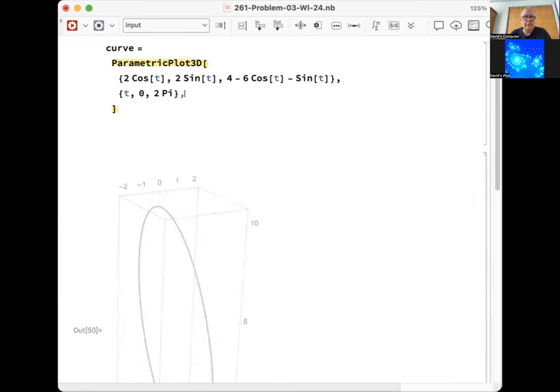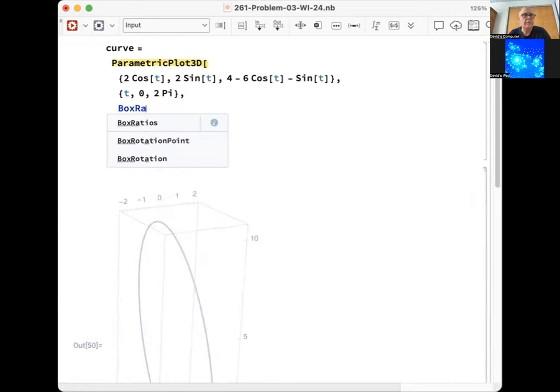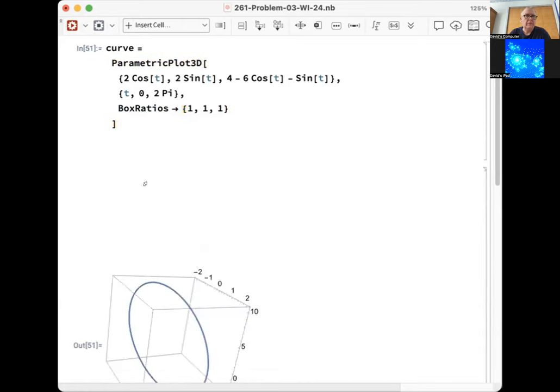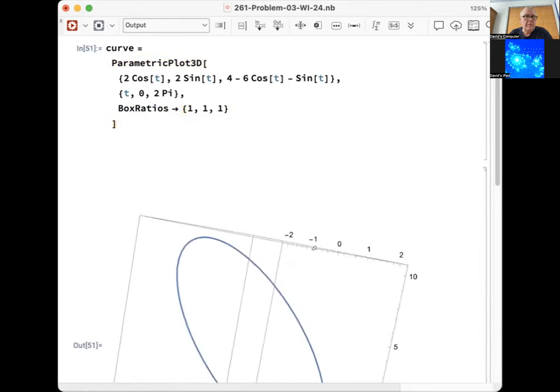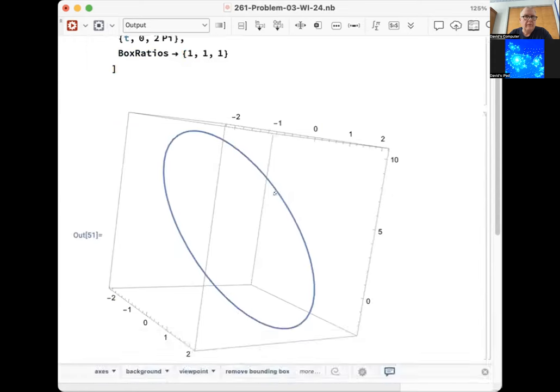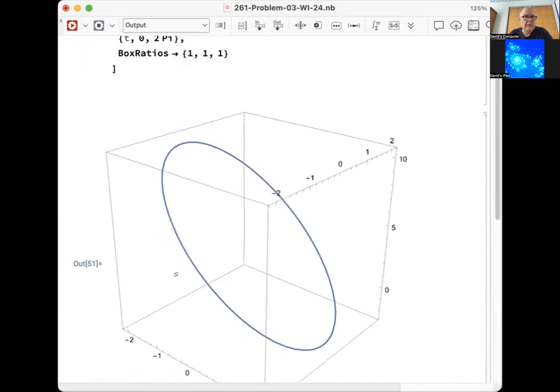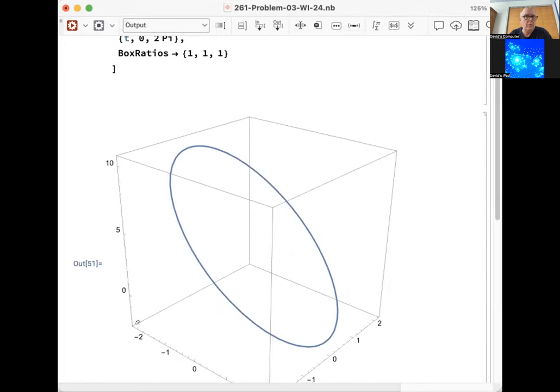Let's get a little bit control over this with box ratios. Set the box ratios to be just at least first 1 to 1 to 1. Okay, now I can move this thing around visualize it. You see the range x and y going from minus 2 to 2, z going from about minus 4 to 10. And then let's go back to our paper.